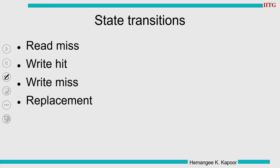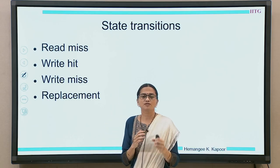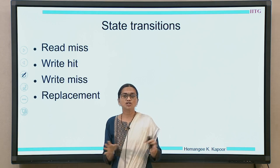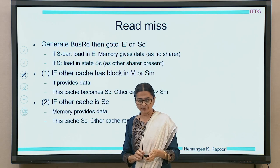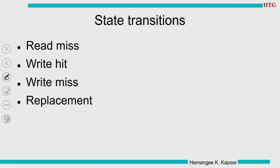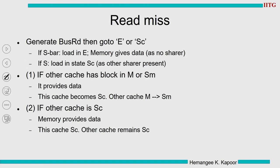That is how we worked out the FSM — a neater diagram is on the slide. Although we have verbally discussed all state transitions, let's go in detail for each. There are four types: read miss, write hit, write miss, and replacement. On a read miss: send a bus read, go to E if no sharers, or go to SC depending on the shared wired-OR signal.